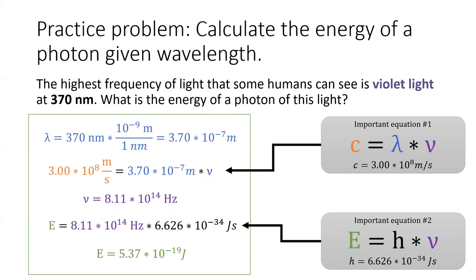This means the highest energy photon that the human eye can see, and only when you're very young, is 5.37 times 10 to the negative 19 joules. To put this amount of energy in context, the impact of a falling snowflake contains two and a half trillion times more energy than a single violet photon.